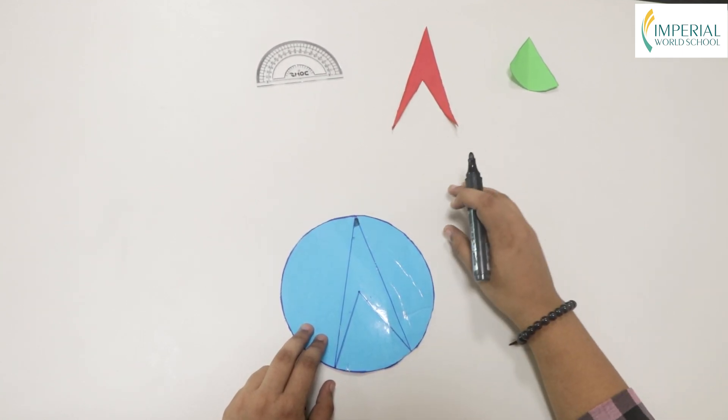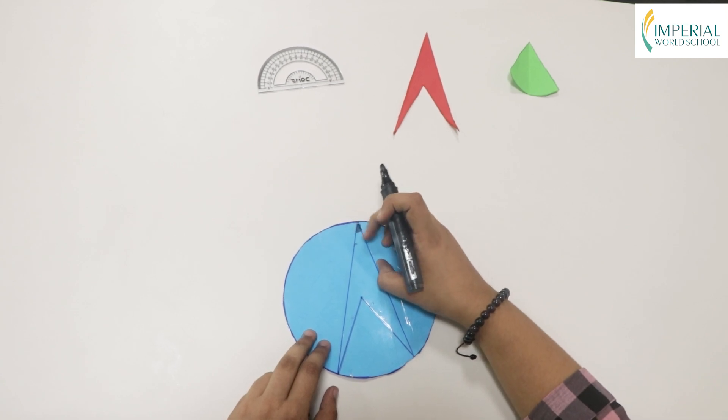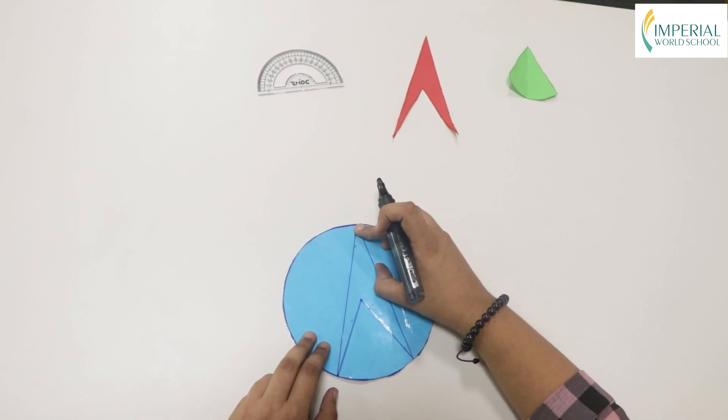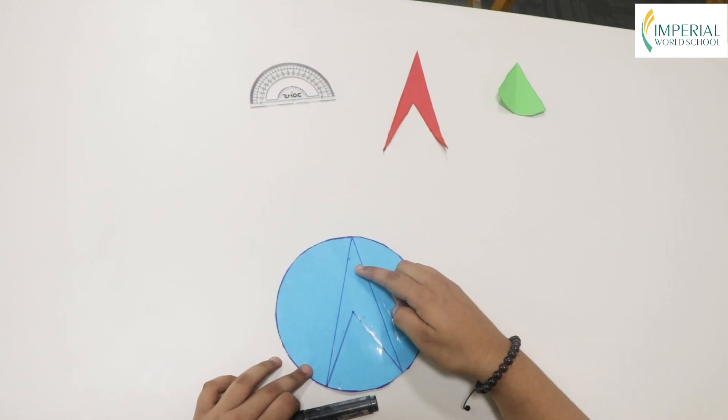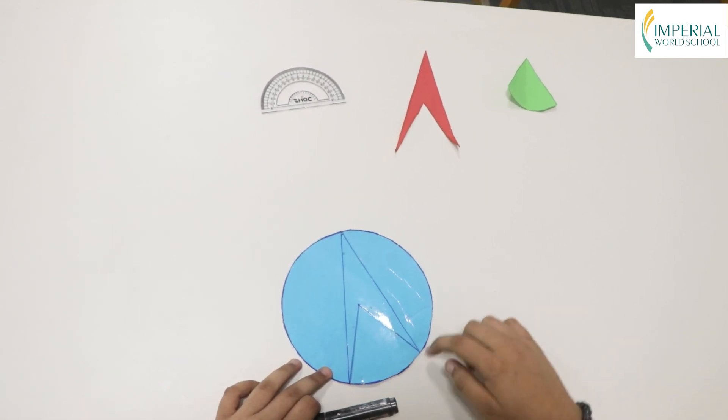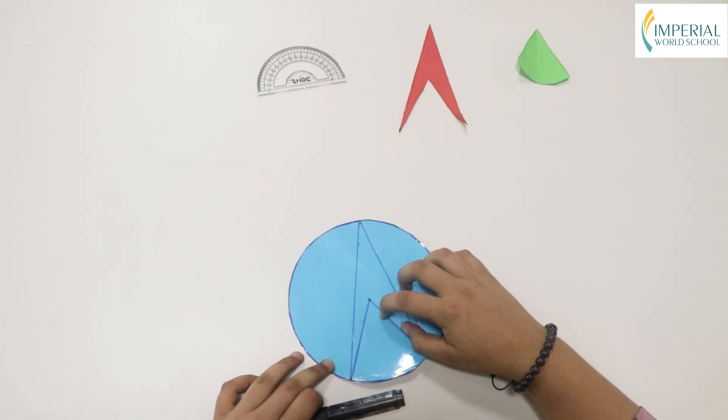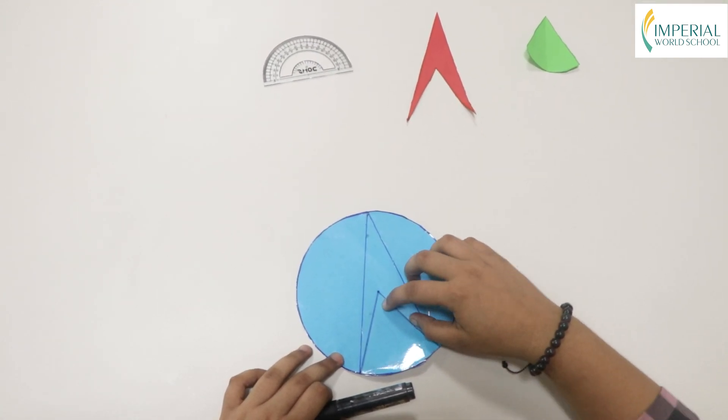And this angle over here is known as the inscribed angle, as it is formed at the circumference of the circle. Both the central angle and the inscribed angle are standing on the same arc, so the central angle will be double the inscribed angle.